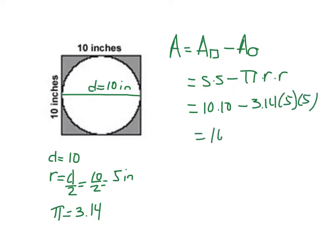10 times 10 is 100. And 3.14 times 5 times 5 is 78.5. And now when I subtract them, 100 minus 78.5 is equal to 21.5. And this one does have units, it's going to be inches squared.